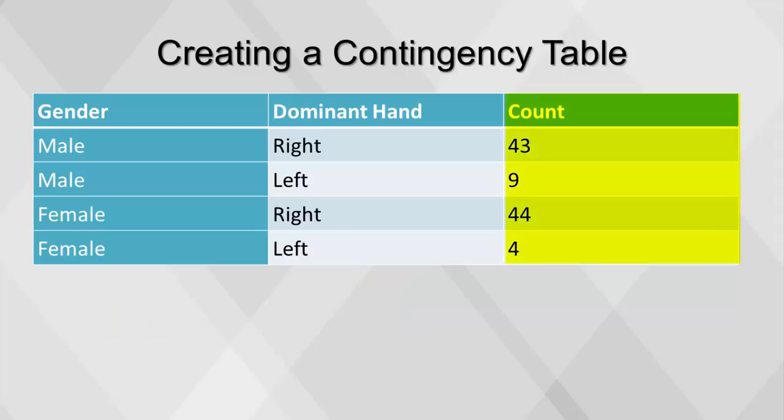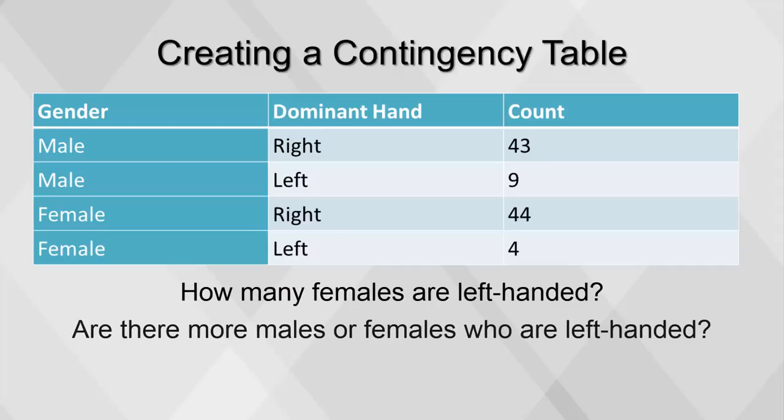For each of these combinations, we count the number of rows that contain both values. At this point, we can extract information regarding the quantity of each combination, allowing us to answer basic questions such as how many females are left-handed, and are there more males or females who are left-handed?